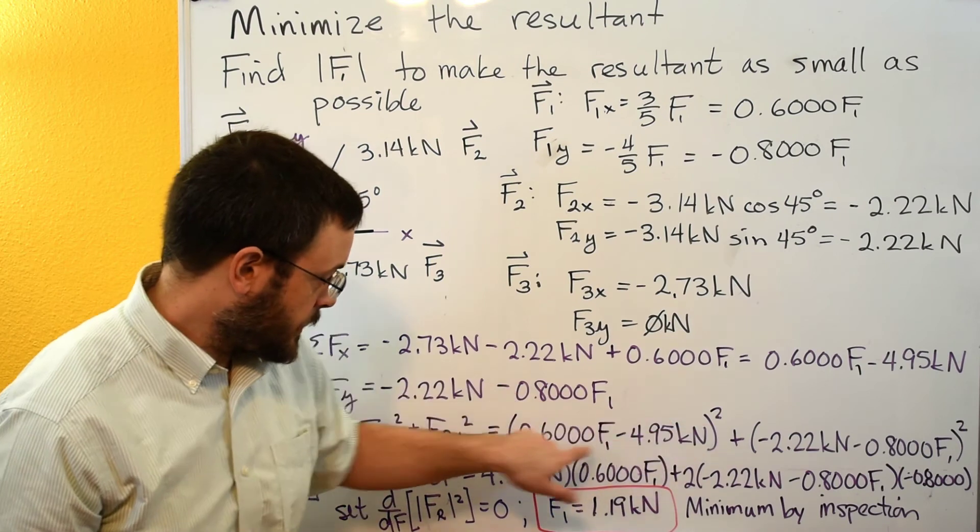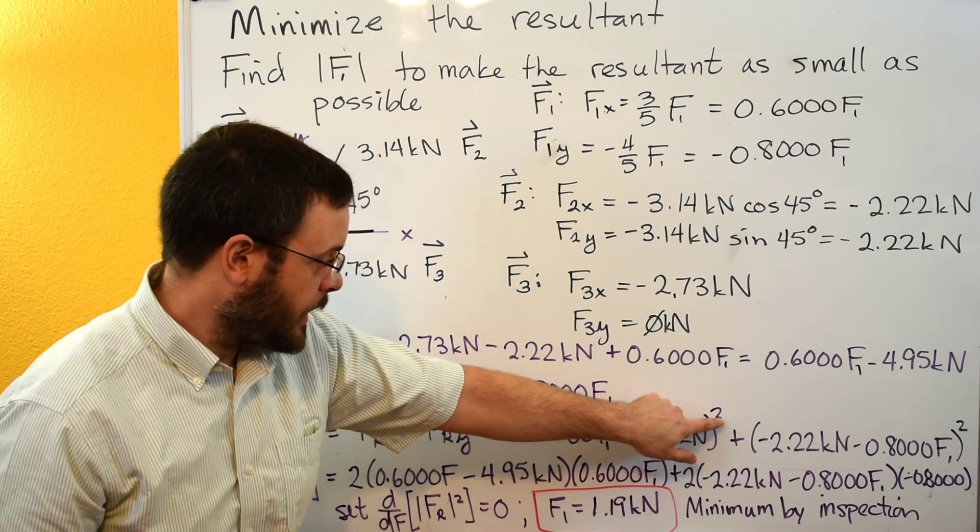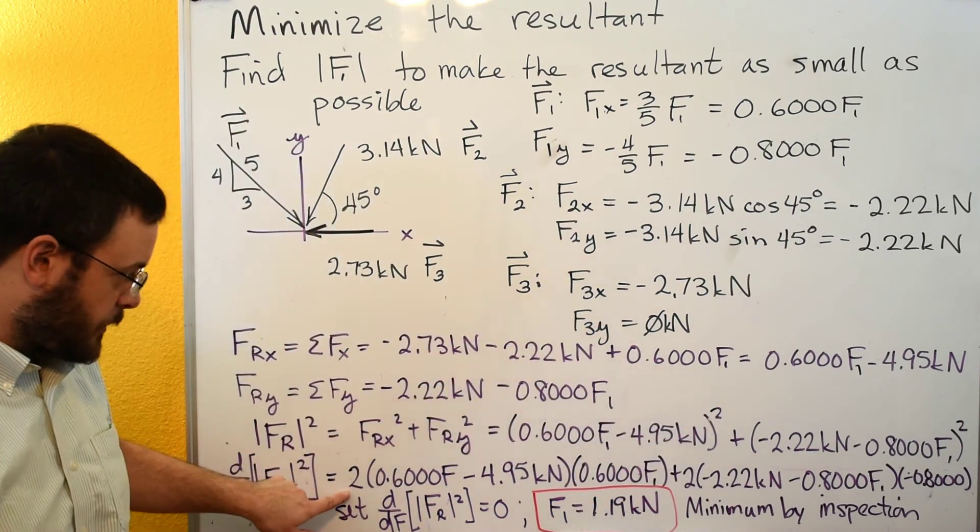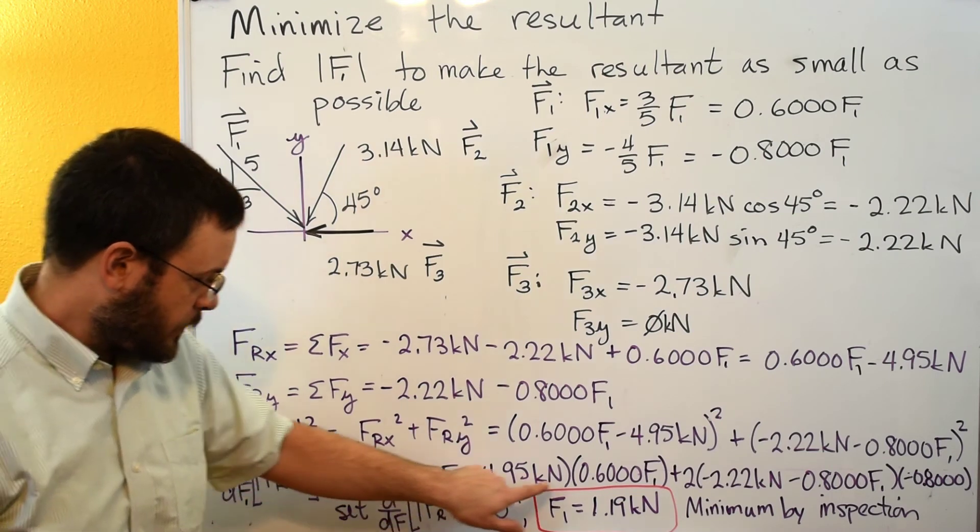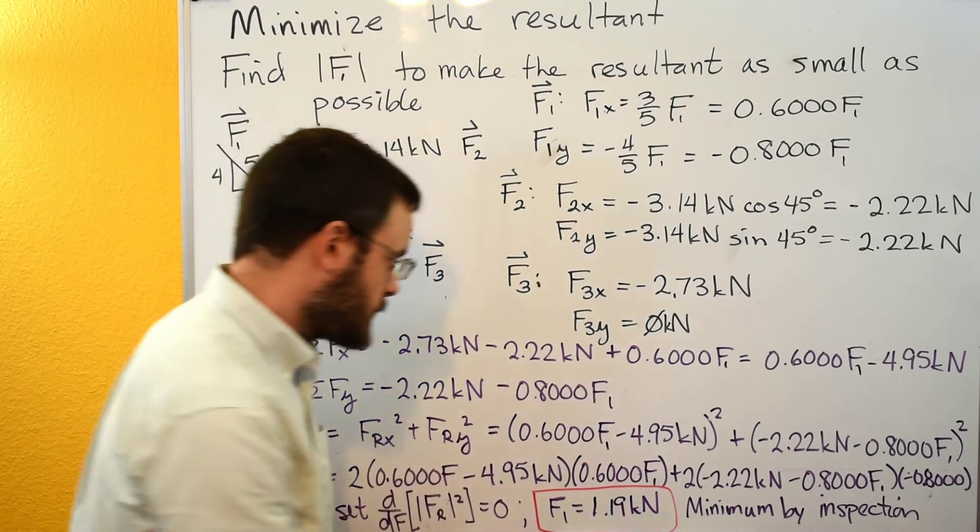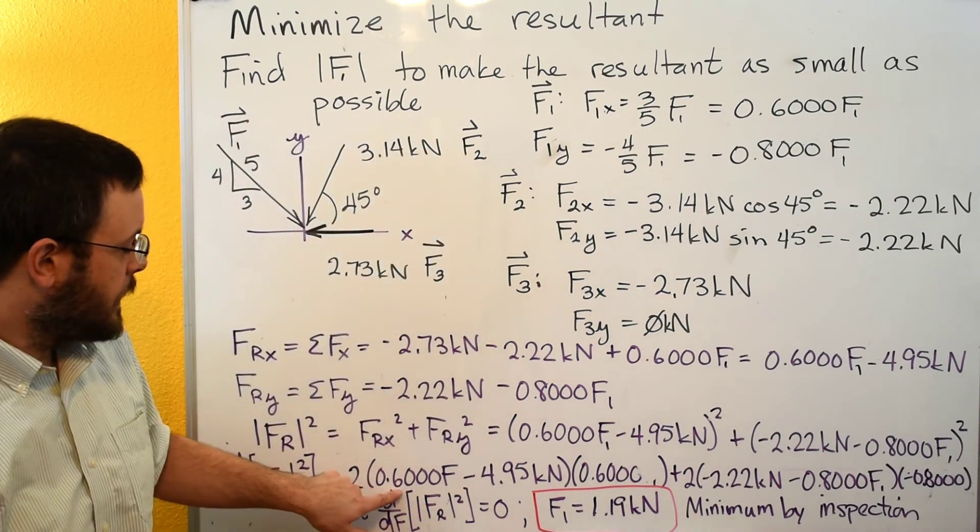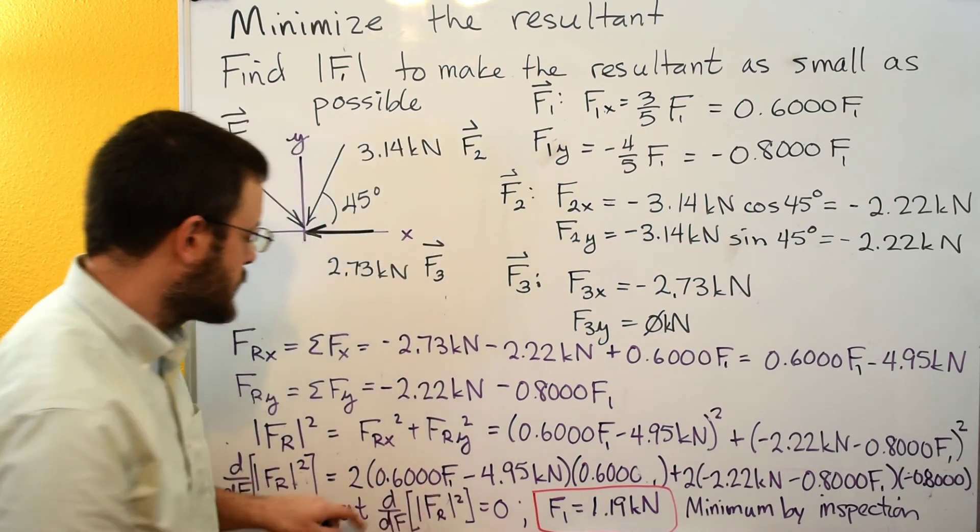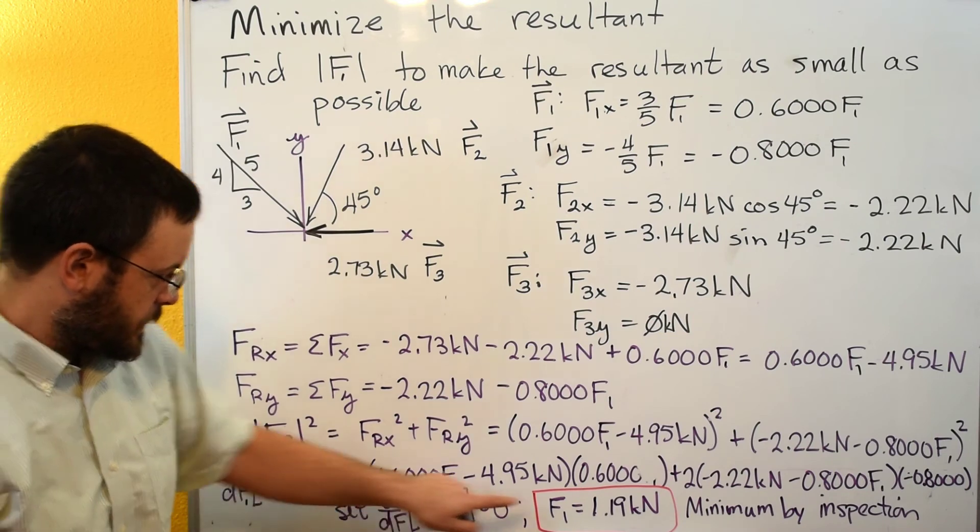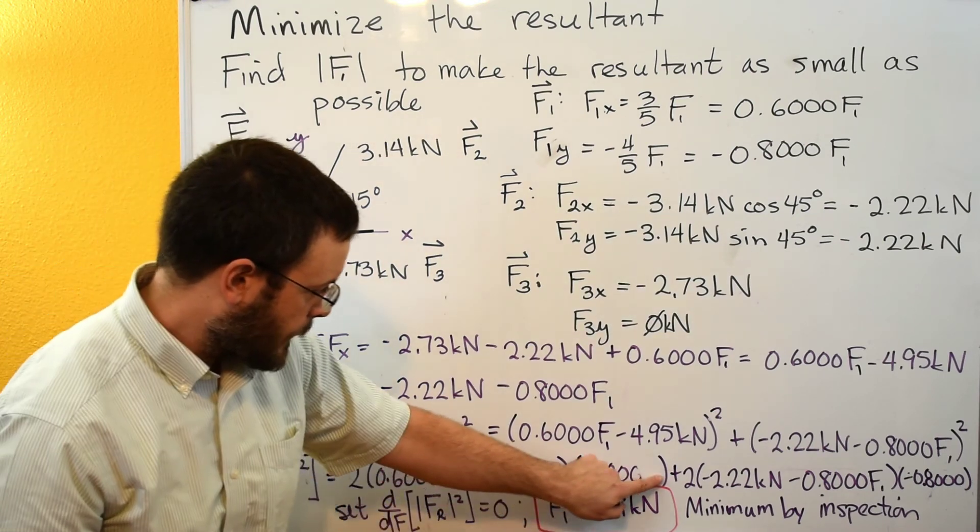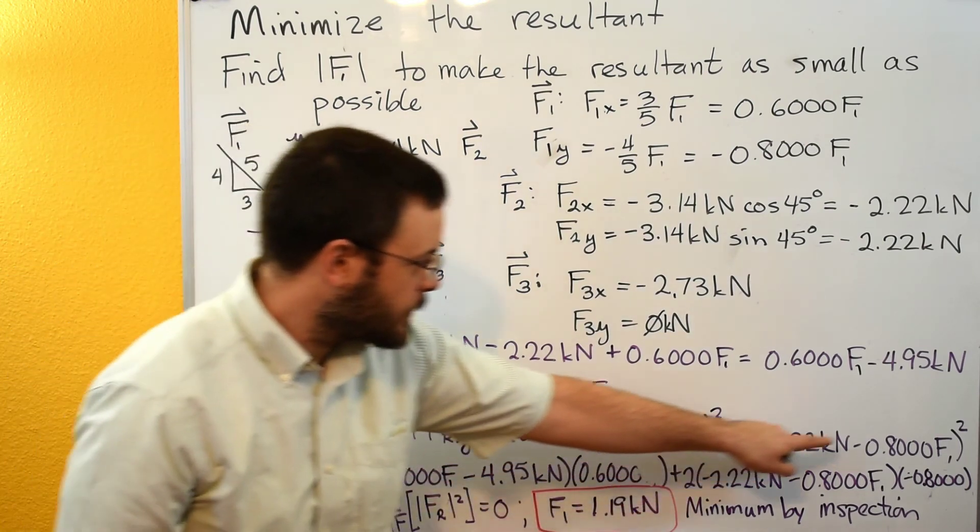So doing this, this is a value raised to the second power. So the 2 comes out in front. And then we have the value. And then we have the derivative of this. This has the F1 in there, so its derivative would be just 0.6. So we have the 0.6 here.